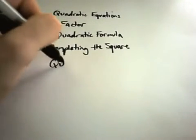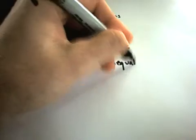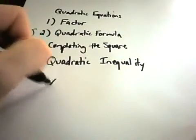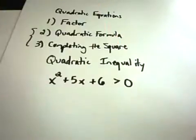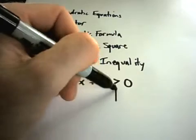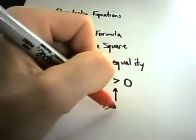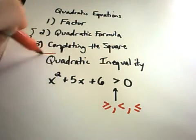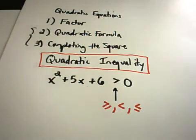A quadratic inequality is basically a quadratic equation where the equal sign is replaced with an inequality. So for example, x squared plus 5x plus 6 greater than 0. The middle sign could also be greater than or equal to, less than, or less than and equal to — those are all considered quadratic inequalities. I'm just picking greater than for this example.